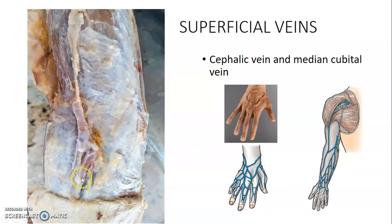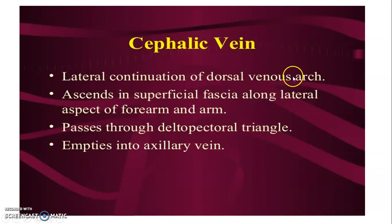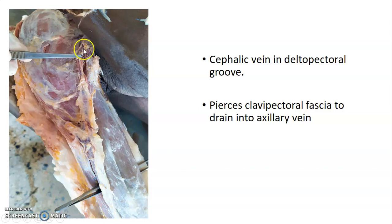These are your superficial vessels. The median cubital vein is visible here, and the cephalic vein passes upwards towards the deltopectoral groove. The cephalic vein drains the upper limb from the lateral aspect, while the basilic vein drains from the medial aspect. At the cubital fossa, the two communicate via the median cubital vein. The cephalic vein is a lateral continuation of the dorsal venous arch — that is its origin — ascending in the superficial fascia along the lateral aspect of the forearm and arm.